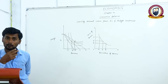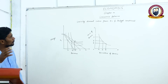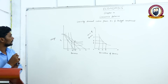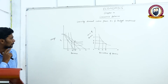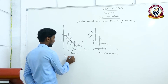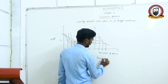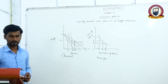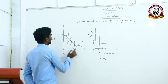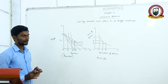You already studied budget line, budget constraint, and budget set. Let us take an example of deriving the demand curve from indifference curve and budget constraint. I'll draw two diagrams on the board — Panel A and Panel B. This is the origin, this is the x-axis, and this is the y-axis.